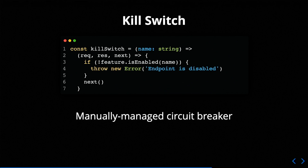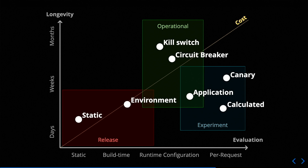Similarly, there's the idea of a kill switch. This code example is for an Express middleware, and we can actually see different feature toggles embedded in there. The idea is we can disable an entire endpoint that we don't want our customers to have access to — maybe something's broken, or maybe that endpoint's being abused. This is essentially a manually managed circuit breaker. We notice a problem, and the difference here is it's not automated whether that feature toggle is on or off — we're doing that manually. These operational toggles are going to last a lot longer in our system, somewhere in months or maybe even indefinitely. And we can see there's an overlap there with the application toggle.